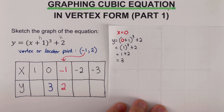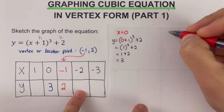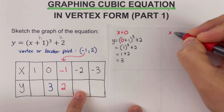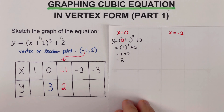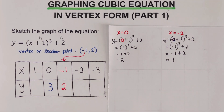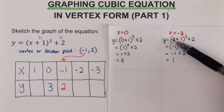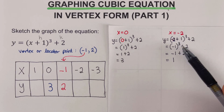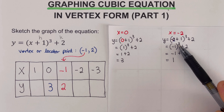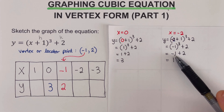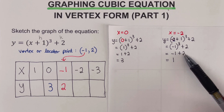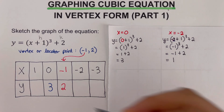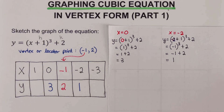Next, we show the work when x is negative 2. We plug negative 2 into x and copy everything else. Negative 2 plus 1 is negative 1. Negative 1 cubed means negative 1 times negative 1 times negative 1, which gives us negative 1. Then negative 1 plus 2 equals positive 1. So the y value when x is negative 2 is positive 1.